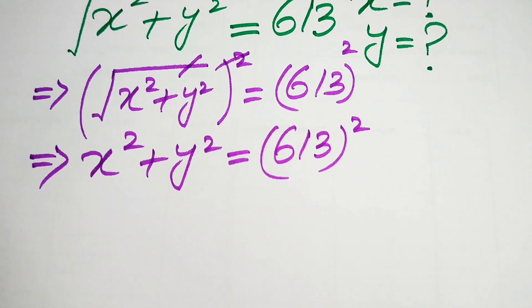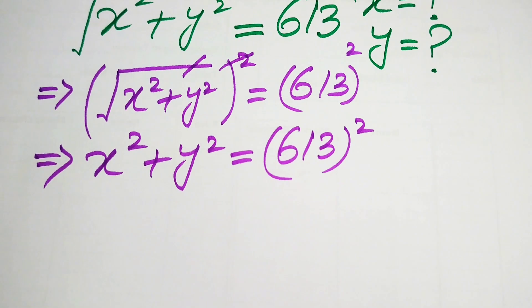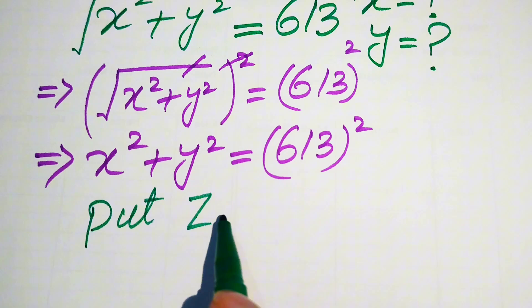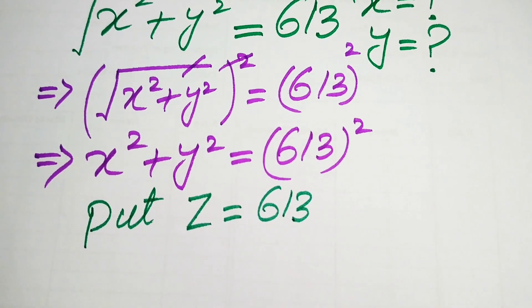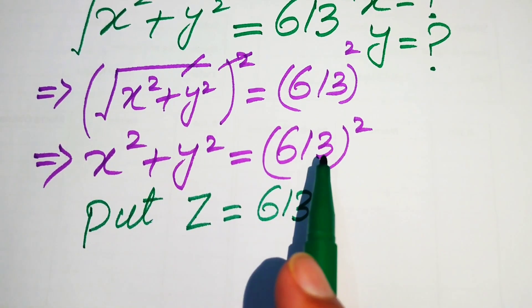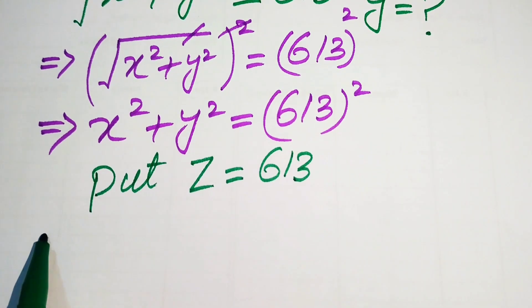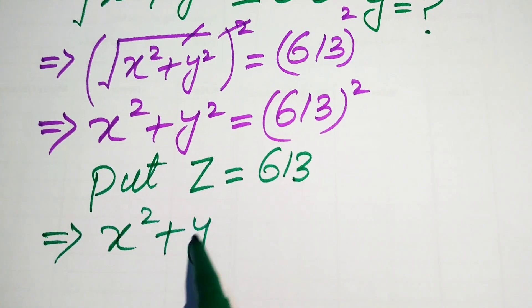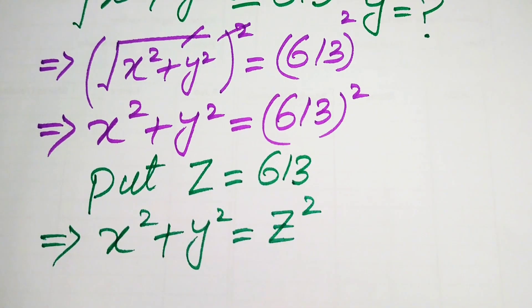On the right-hand side we have 613². We now let z = 613, so this equation is written as x² + y² = z².